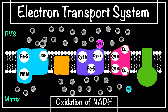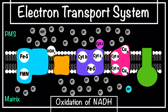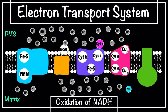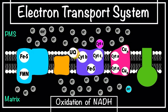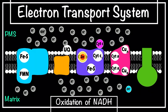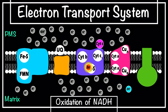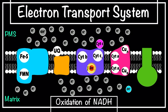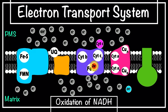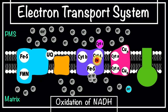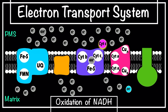The flow of electrons through Complex I causes the flow of four protons from the matrix to the intermembrane space, so it acts as a proton pump. This ubiquinol is a mobile electron carrier which transfers the electrons to the electron carriers of Complex III. Cytochrome b accepts the electrons from ubiquinol, which gets oxidized back to ubiquinone, and the electrons are transferred to cytochrome c1 through iron-sulfur proteins. The flow of electrons through Complex III also causes the flow of four protons from the matrix to the intermembrane space.